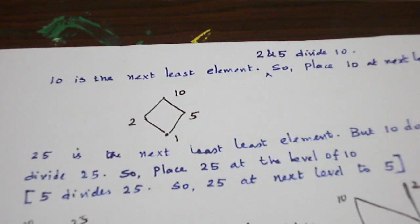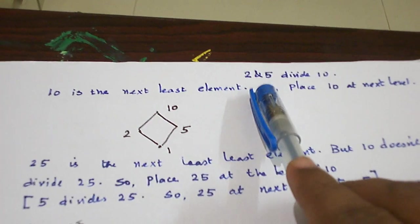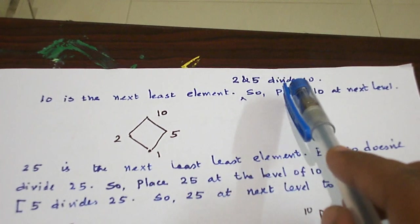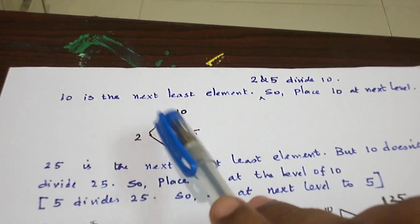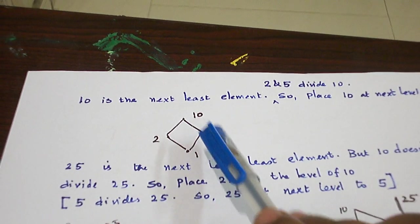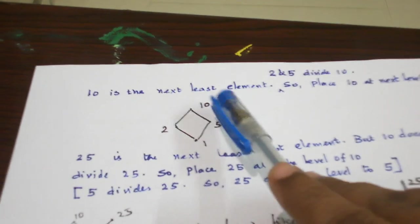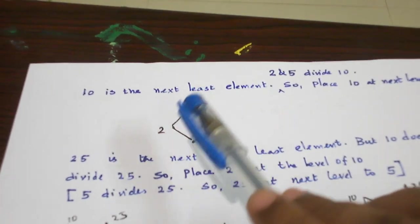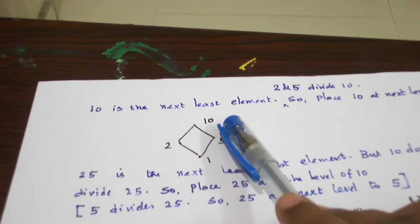The next least element is 10. Both 2 and 5 divide 10 — that is represented by these lines: 2 divides 10, and 5 divides 10. So let us place 10 above the level of 2 and 5.